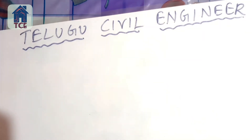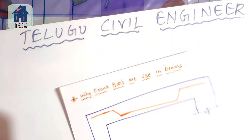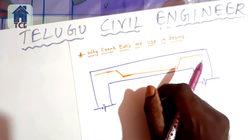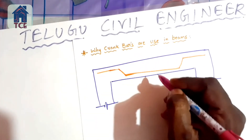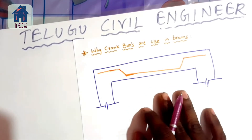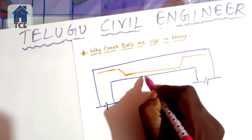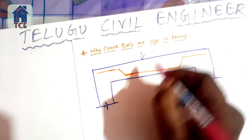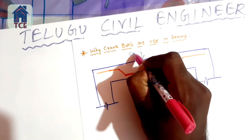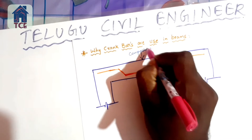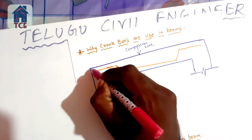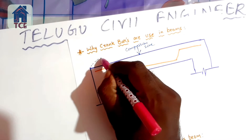Welcome to New School Engineering. Today we are covering crank bars used in beams. Crank bars are small bars used in beams. This is the bending moment zone, this is the compression zone, and the load is in the compression zone. This is the tensile zone, and the load is in the beam.